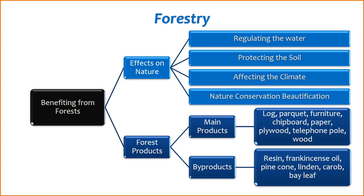Forest Products: 1. Main Products — Log, parquet, furniture: wood from forests is used for various purposes, including construction, furniture, and flooring. Chipboard, paper, plywood: wood-based products such as chipboard, paper, and plywood are derived from forest resources. Telephone poles: timber from forests is utilized in the construction of telephone poles. 2. Byproducts — Resin, frankincense oil: certain trees in forests produce resin and frankincense oil, which have various applications in industries and traditional practices. Pine cone, linden, carob, bay leaf: forests yield various non-timber products like pine cones, linden, carob, and bay leaves, which find use in different sectors.